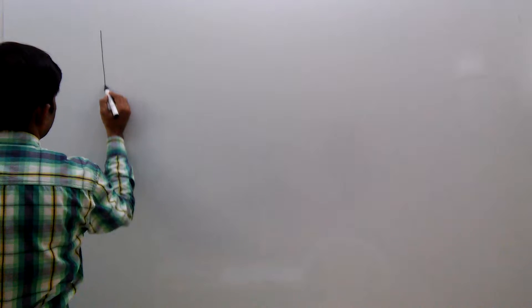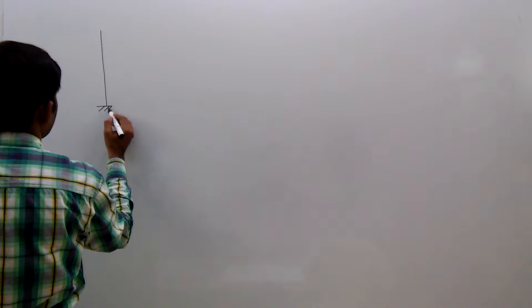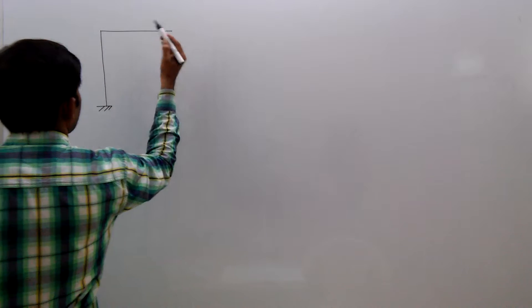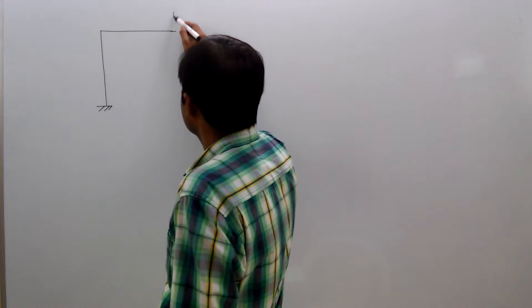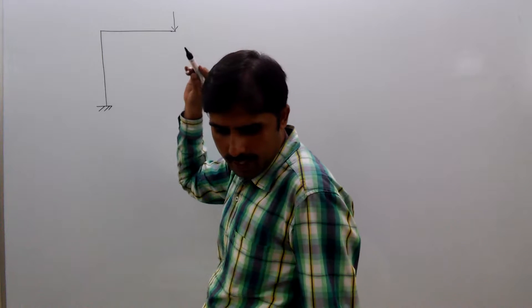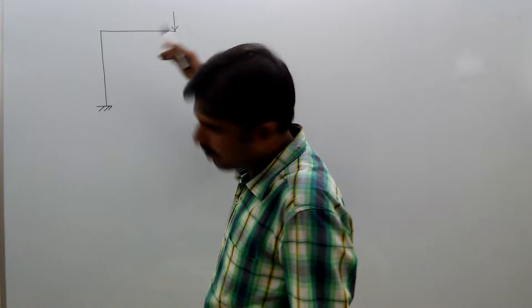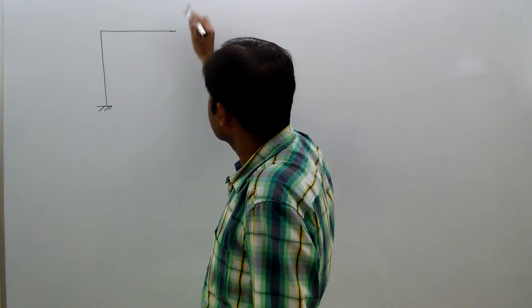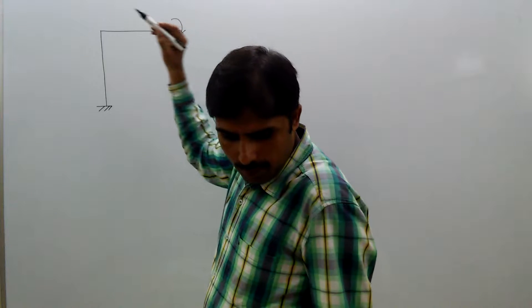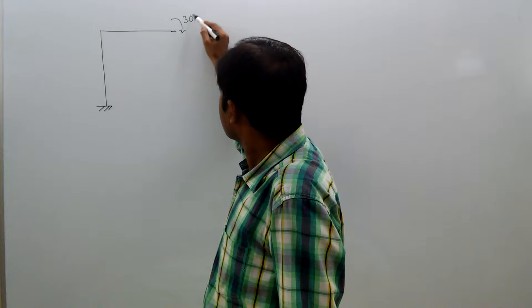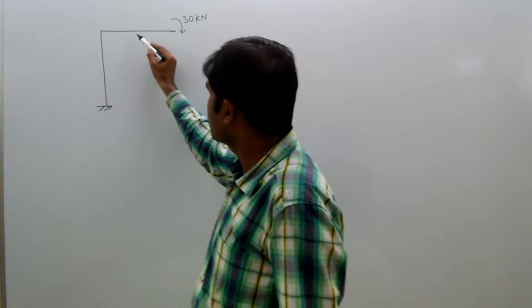The rigid jointed frame is like this having a point load at the free end. It's not a point load, it's actually a couple, a couple of particular returns at the free end. This is three meters.